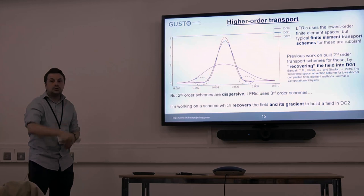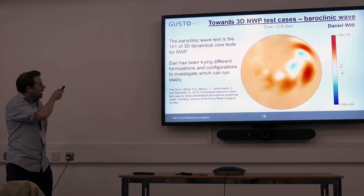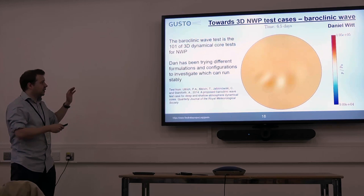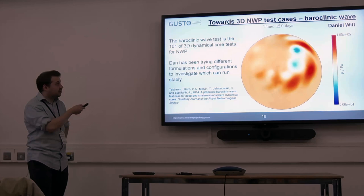This plot is from today. This is a 3D test with the 3D full equations — a 101 for NWP test cases. It has this big baroclinic wave that Daniel Witt has been working on with Gemma. What is actually cool is that Elfrick can only run this stably to 12 days, and we've managed 15, so I'm quite pleased with that.